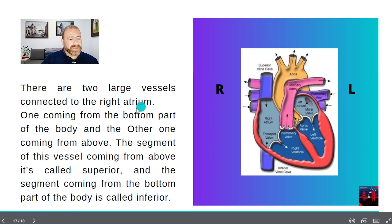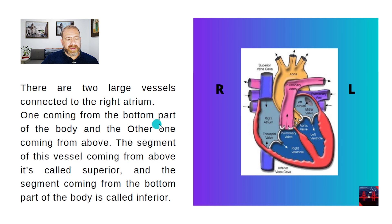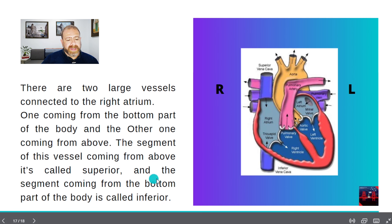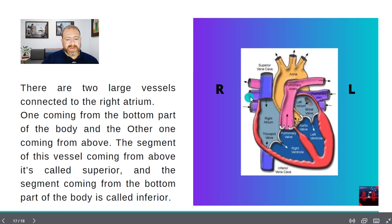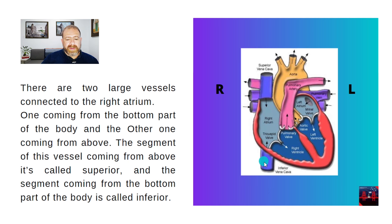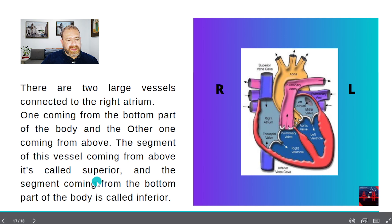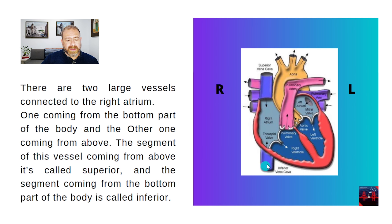There are two large vessels connected to the right atrium: one coming from the bottom part of the body, and the other one coming from above. The segment coming from above is called superior, and the segment coming from the bottom part of the body is called inferior.